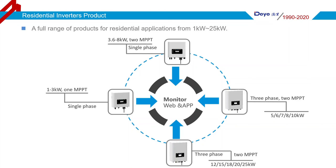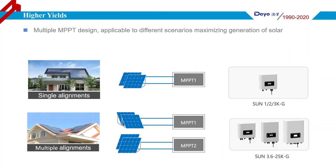The Doye inverter adopts multiple MPPT designs suited to different scenarios to maximize generation of solar energy. It achieves a maximum efficiency of 97.5% and MPPT efficiency of 99%. For a single-orientation roof, a 1 MPPT inverter is recommended, while for a dual-orientation roof, a 2 MPPT inverter is suitable.